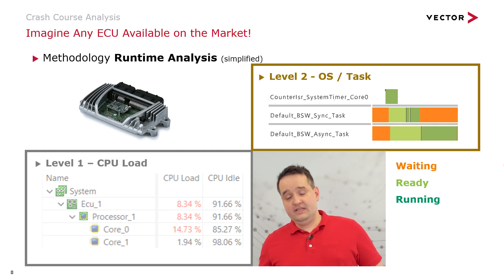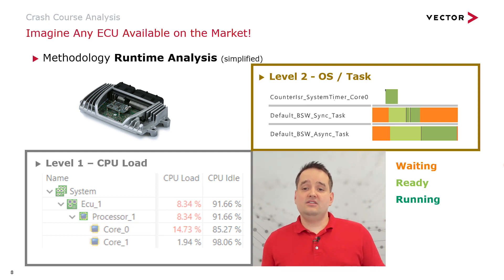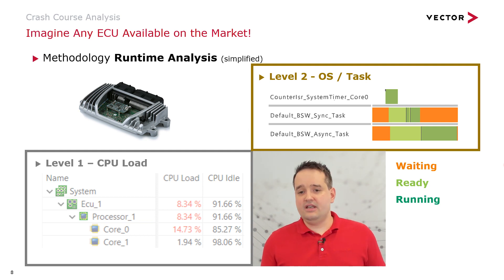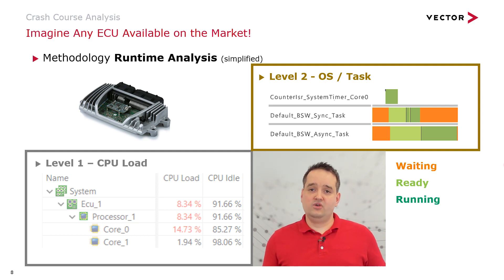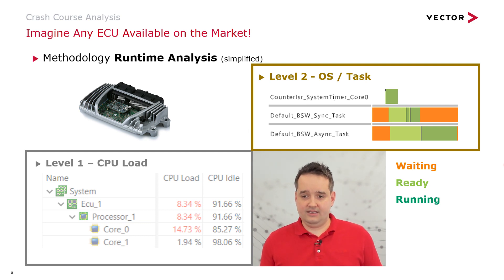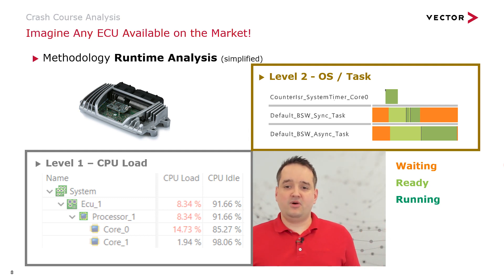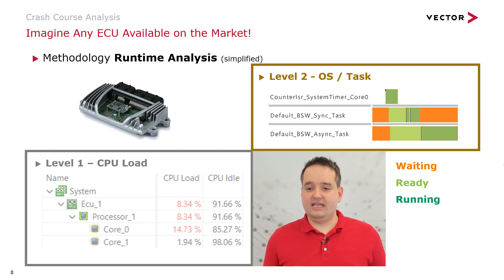Let's say we want to gain information about the OS scheduler and the task scheduling. Some of you are familiar with the color code here. You see a counter interrupt service routine and a synchronous and asynchronous basic software task. Orange means the task is currently in the waiting state. This light green area means it's in the ready state to be executed. The scheduler picks the highest priority task — first the synchronous task, then the asynchronous task — and sets it in the running mode.